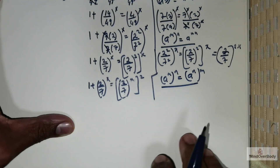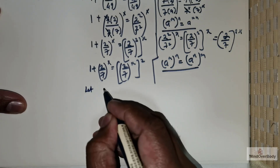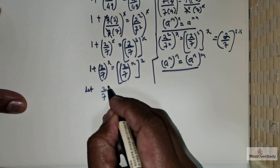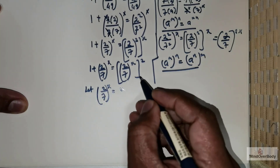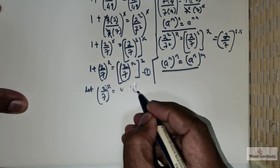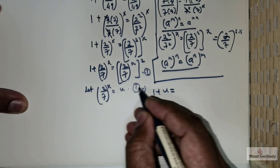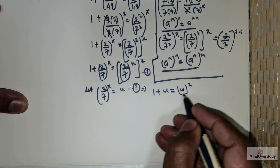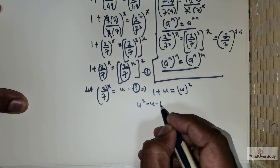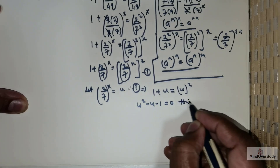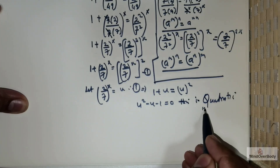Now I am going to make a substitution. Let 2 over 7 raised to the power x equal some u. Taking the step as 1 plus u squared, I can rewrite the equation as 1 plus u equals u squared, which gives u squared minus u minus 1 equals 0. This is a quadratic in u.